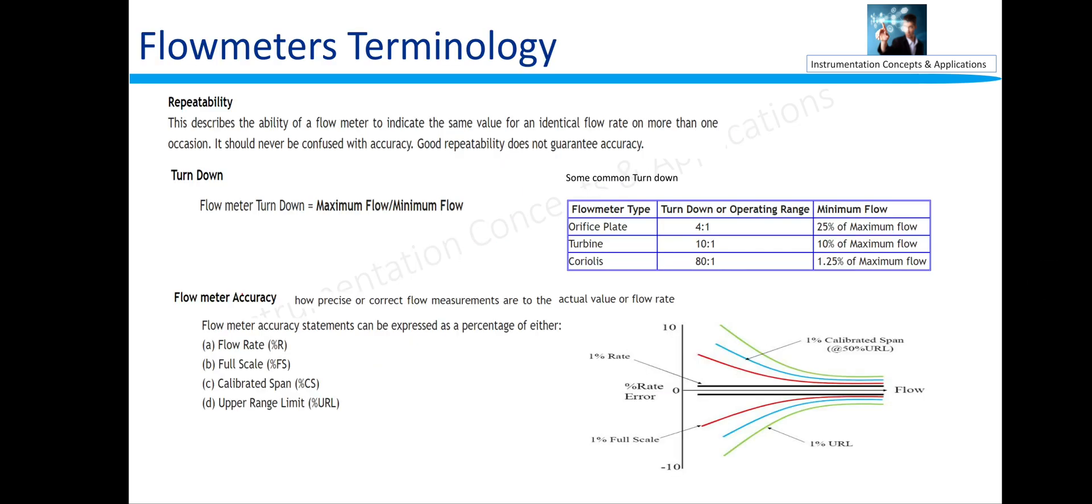Before starting this session, I want you to make clear three flow meter terminologies. The first one is repeatability. Repeatability defines the ability of a flow meter to indicate the same value of an identical flow rate on more than one occasion, and repeatability should never be confused with accuracy. Good repeatability does not guarantee accuracy. This line is important.